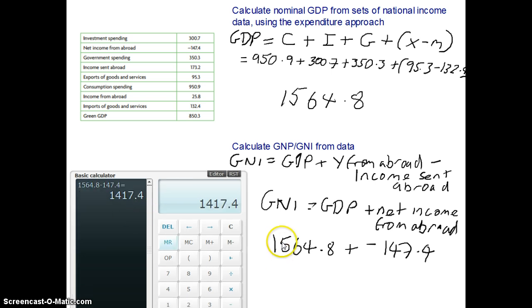Okay, so as you can see, 1564.8 minus 147.4 gives us a GNI of 1417.4. Again, as easy as that. If we hadn't got the net income from abroad figure, simply we'd just